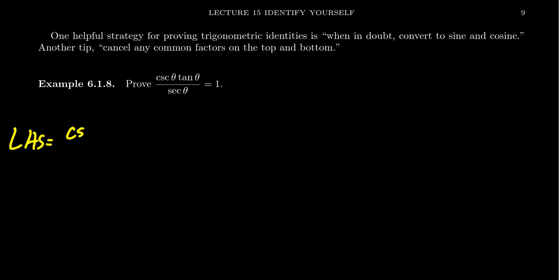We're going to take cosecant theta, tangent theta, divided by secant theta. So what I'm first going to do is change this fraction into a product. You can bring the secant up above using the reciprocal identity, in which case you're going to end up with cosecant theta times tangent theta times cosine theta.